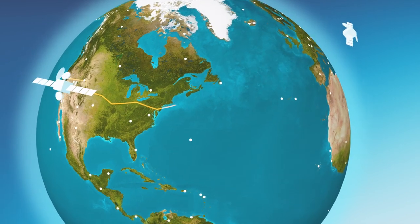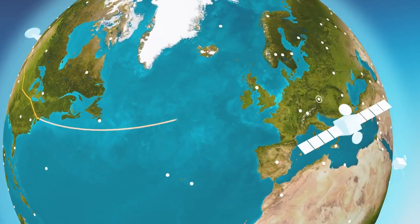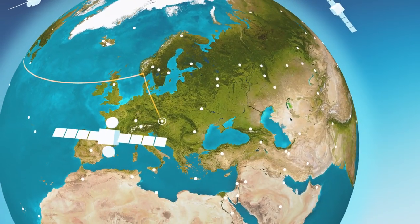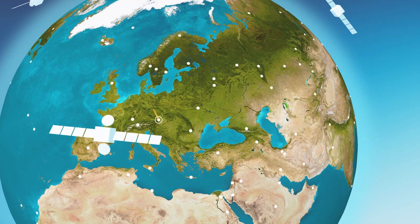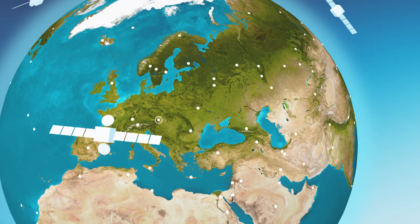From there, data are transmitted through protected connections to Vienna. The entire data transmission from a monitoring station to the International Data Center in Vienna takes place in a matter of seconds.